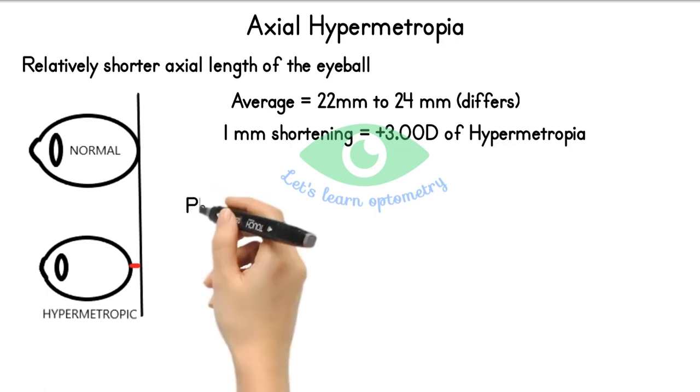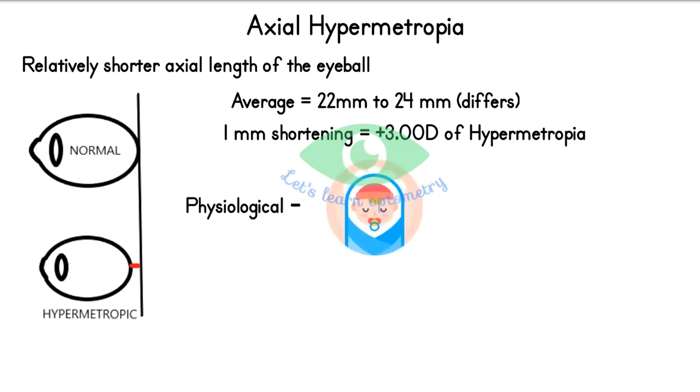Physiologically, majority of infants are hypermetropic due to shorter axial length. As the child grows, the eyeball grows and hypermetropia gradually reduces. The eye becomes normal through a process called emmetropization.